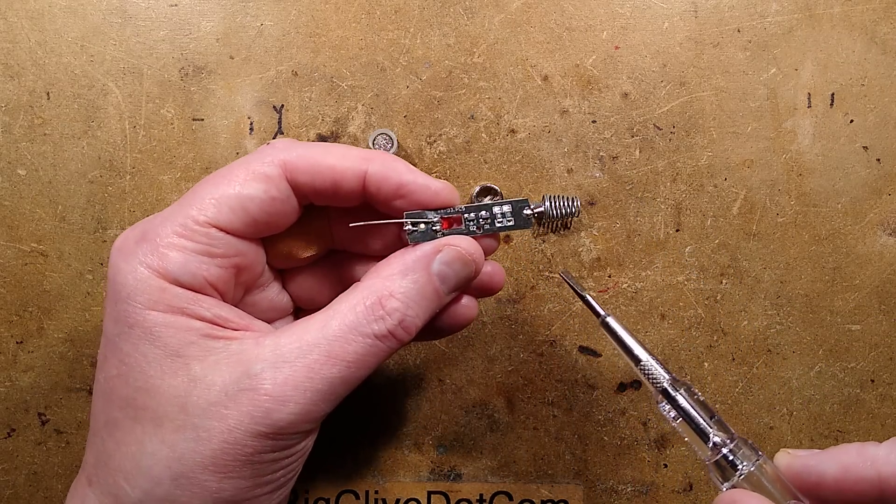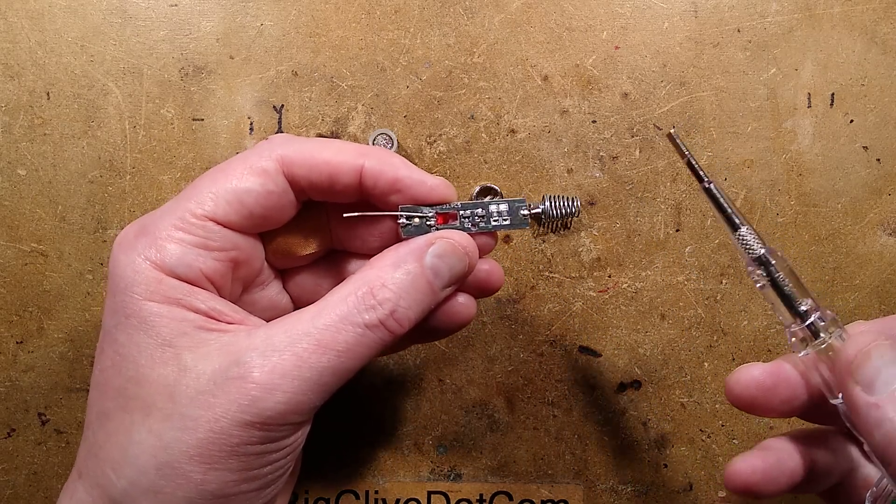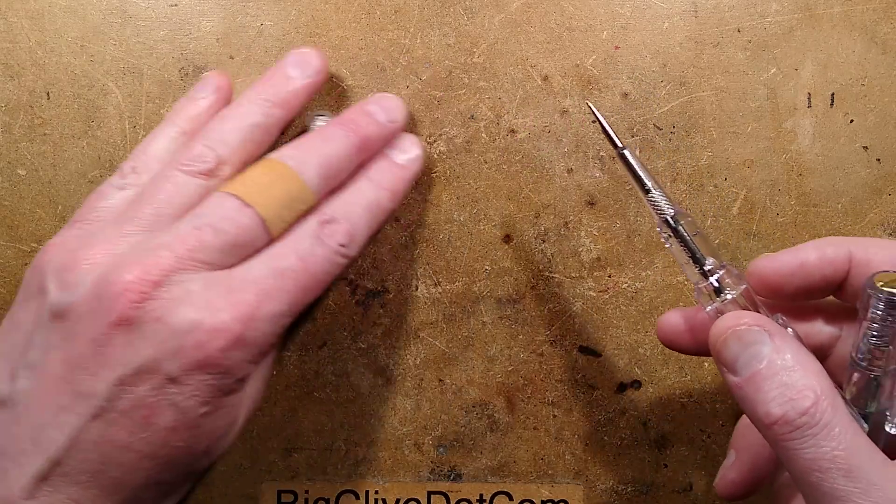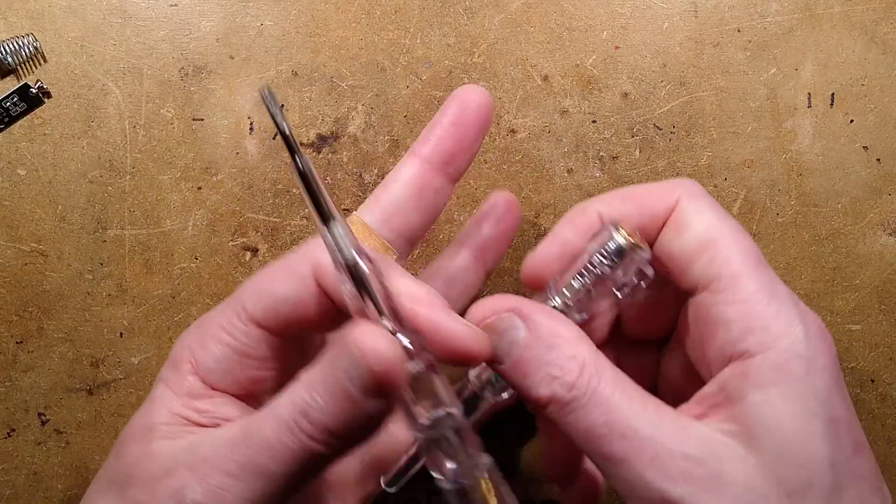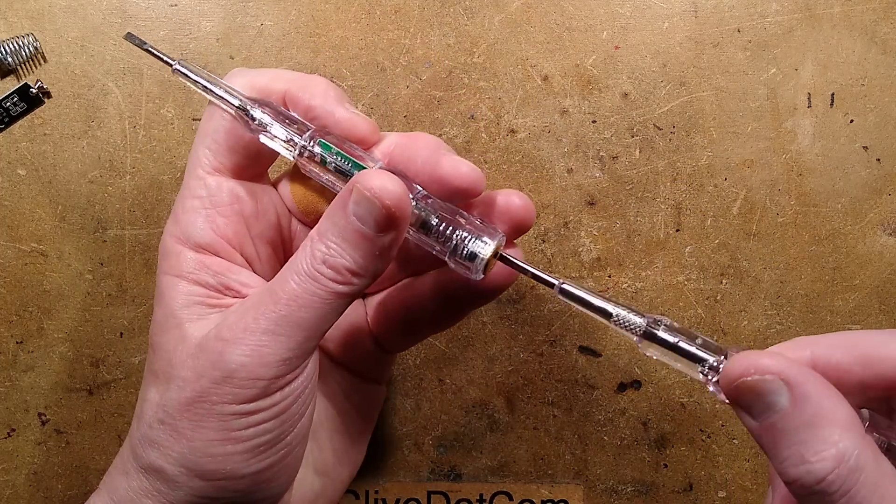I shall explore this further. But this one is using two transistors, which may be just configured as that sort of rudimentary Darlington. Now I should put that one to the side so we don't mix the bits up. And I shall go into this one.